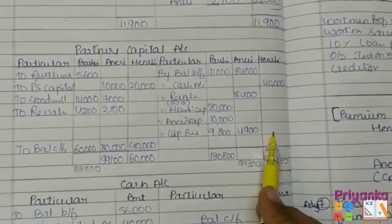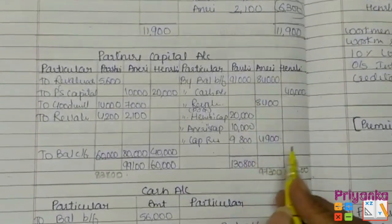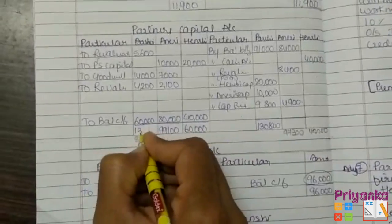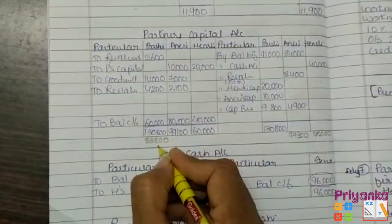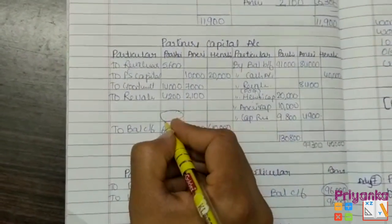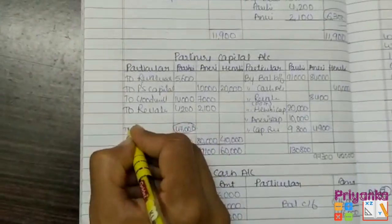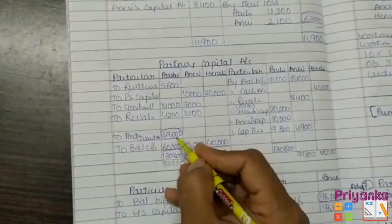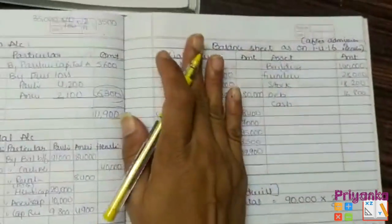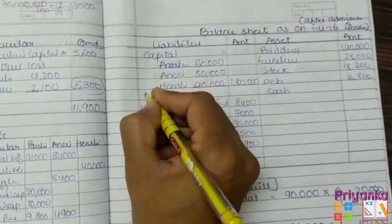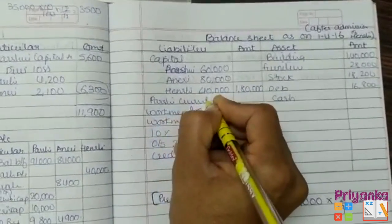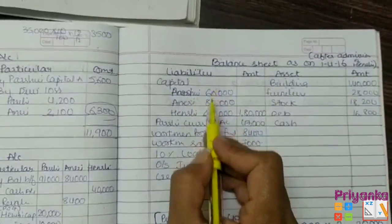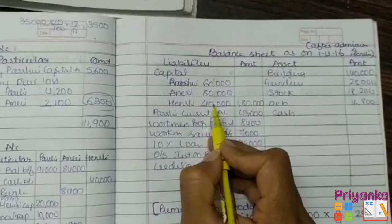After totalling the partner's capital account, Parsvi's credit side is comparatively more than the debit side. Get the difference: debit minus credit total gives 47,000, which is declared as a partner's current account. This difference comes on the debit side, so in the balance sheet on the liability side, write Parsvi's current account with amount 47,000. The closing balance is 1,80,000, distributed between the partners in their new ratio.